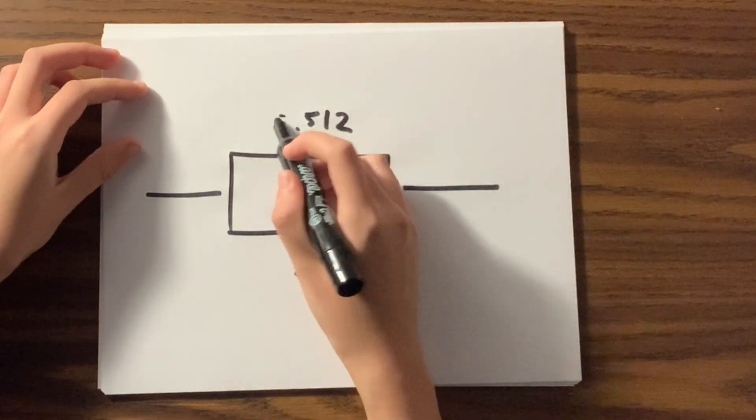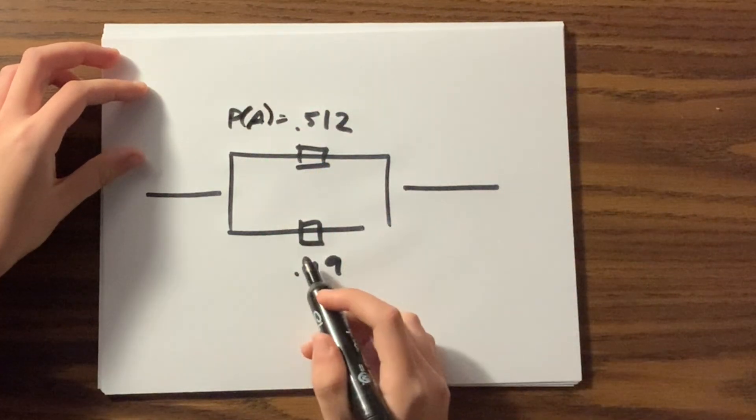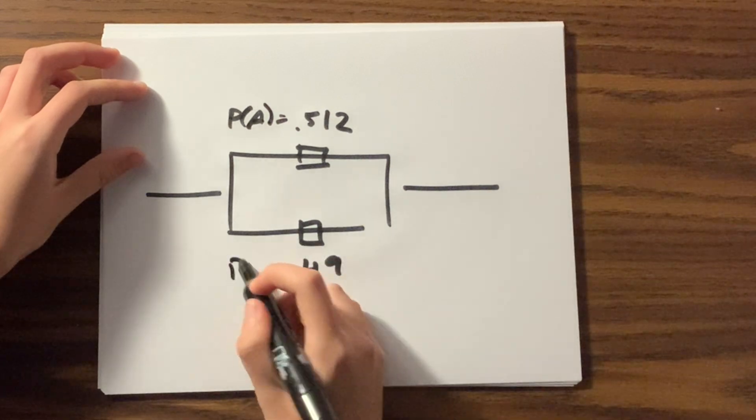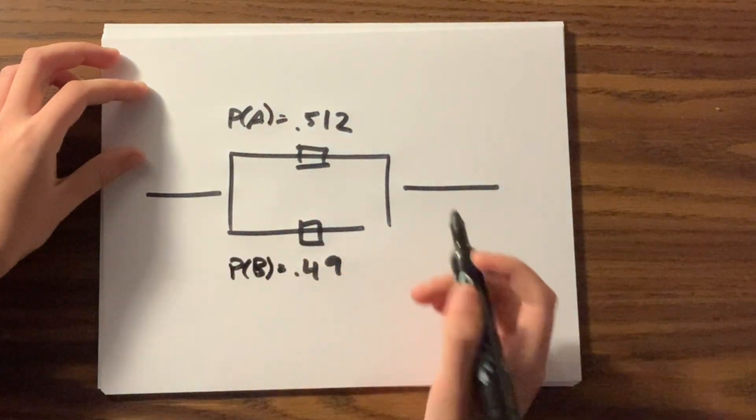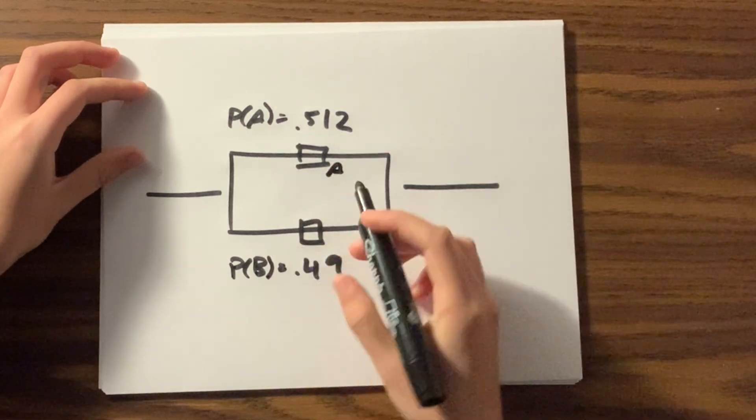I'm going to rewrite this to simplify the circuit problem. We can call the probability of this one occurring the probability of A, and we can call the probability of this one occurring the probability of B. So this part is part A and this part down here is part B.